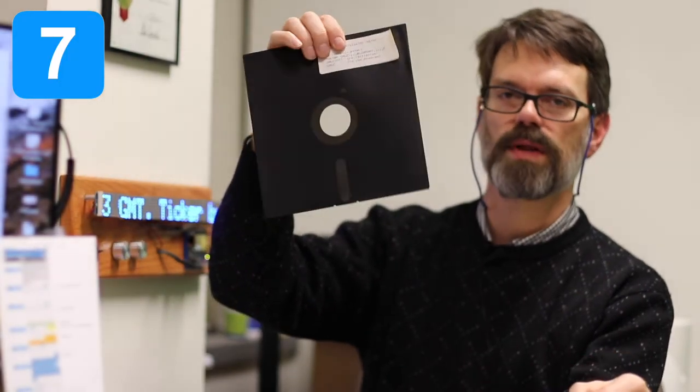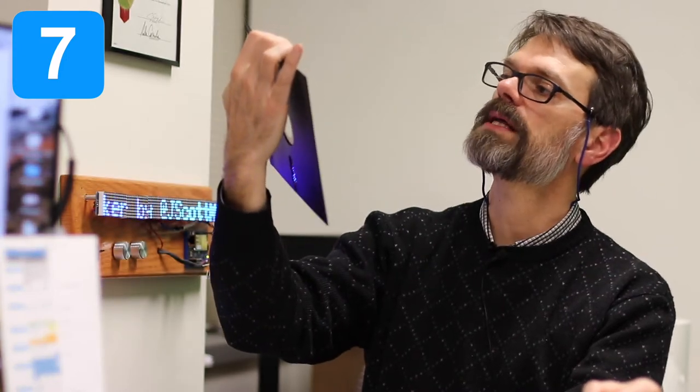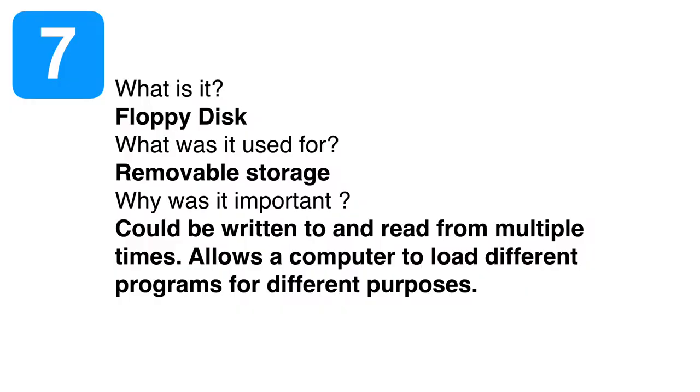And then finally, this is a floppy disk. So this is one of the big ones. This is an eight inch floppy disk. And this is how we can store programs and data. Some of them you could actually use both sides of. And they were floppy disks compared to hard disks.